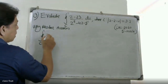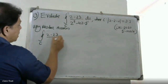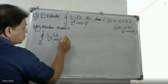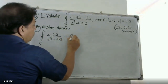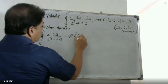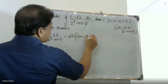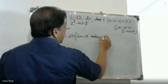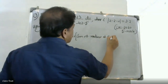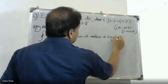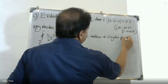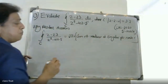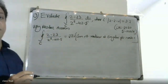We apply the formula: the integral equals 2πi times the sum of residues at singular points inside C. This is the Cauchy Residue Theorem formula.